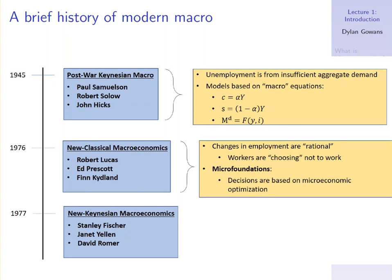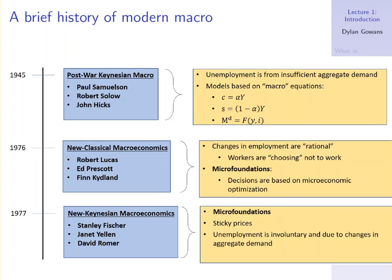There was then a reaction to this, referred to as New Keynesian macroeconomics. Some names here: Stanley Fischer, Janet Yellen — who until recently was the head of the Federal Reserve — and David Romer. What did these people say? They said yes, micro foundations — we agree, we should build these models from micro foundations, built from the ground up. But we don't believe that changes in employment are rational. We do believe that unemployment is involuntary and due to changes in aggregate demand, and the way they get those changes is due to sticky prices.